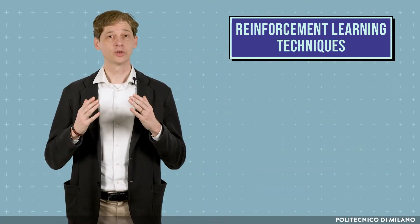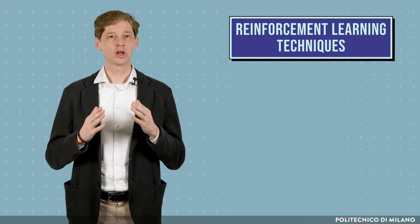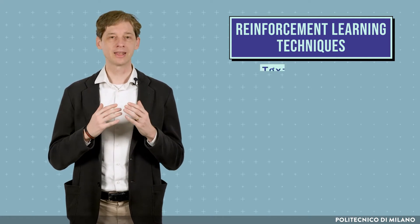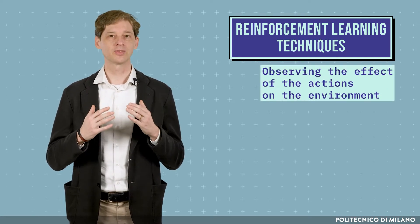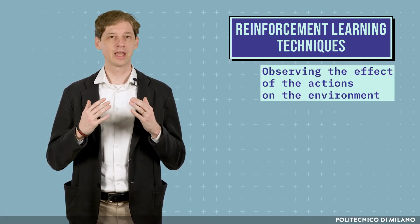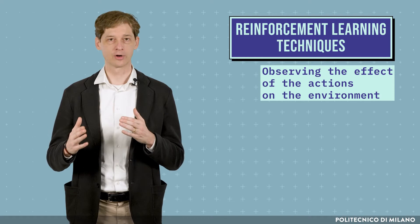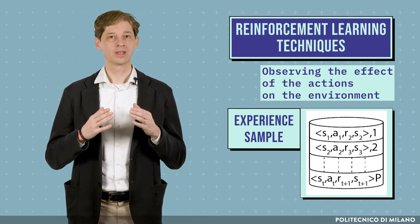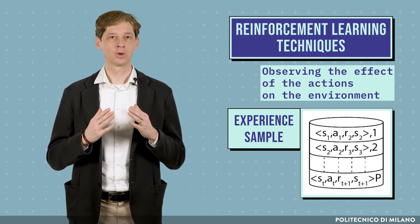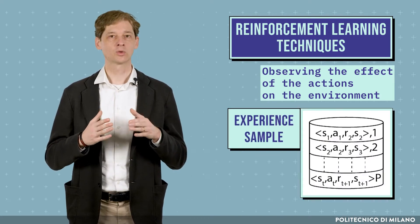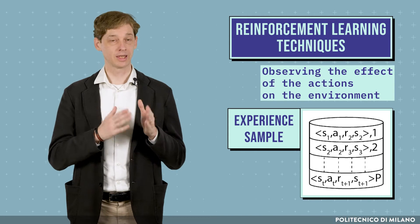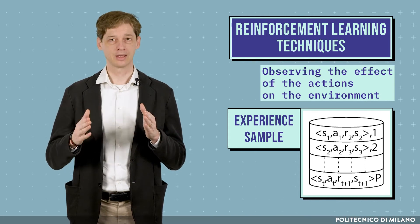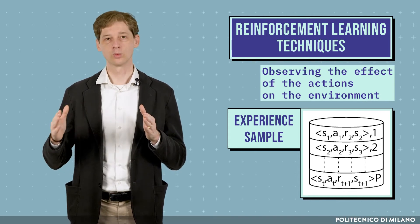In reinforcement learning, the knowledge of the transition model is replaced by observing the effect of the action on the environment. We call an experience sample a sequence composed of state, action, next state, and reward.